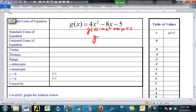AX squared plus BX plus C. Standard form is G of X equals A, parentheses, X minus H, square plus K.